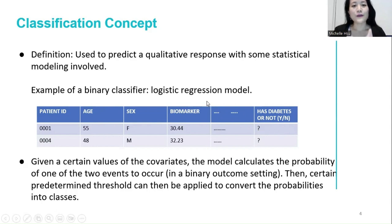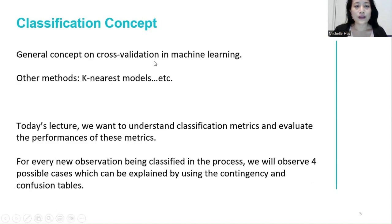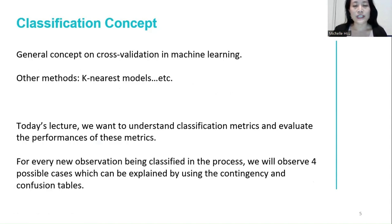There are also many other binary classifiers. In machine learning or in biostatistics, you can use the K-nearest method, you can use random forest. So how do we determine which model, which technique works the best, or even how to test and compare them? In order to do that, we need to start a procedure called cross-validation.